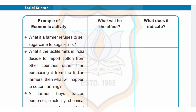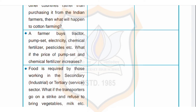Third example: a farmer buys a tractor, pump set, electricity, chemical fertilizer, pesticides, etc. What if the price of the pump set and chemical fertilizers increases? The effect will be that the cost of production of primary sector goods will increase. The products prepared in the primary sector will be sold to the secondary sector, and hence the cost of the final product sold to the customer will be high.